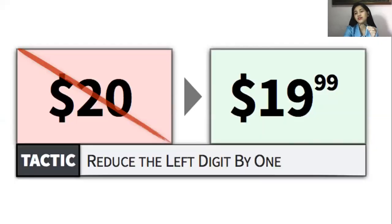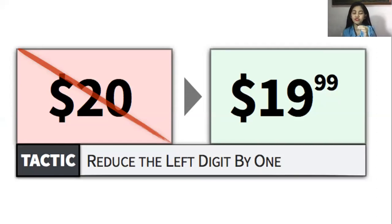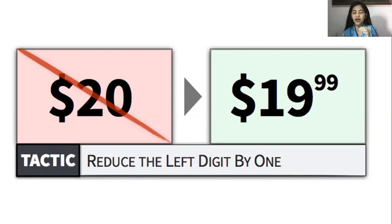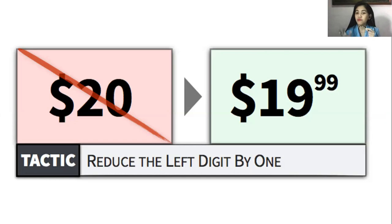These are examples of focus group discussion insights. For example, the price tactics used by entrepreneurs — like reduce the left digit by one. If you notice prices in malls, they always end in nine. According to FGD insights, customers consume more products or services whose prices end in nine, sometimes preferring them over prices ending in zero. So customers prefer prices whose last digit is nine.